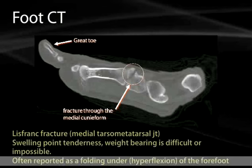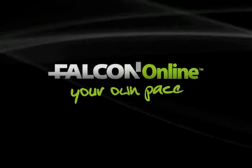The mechanism of injury is often reported as a folding under or hyperflexion of the forefoot being forced underneath the body. That concludes our look at the imaging of the lower limb; the next section will start dealing with the next topic.